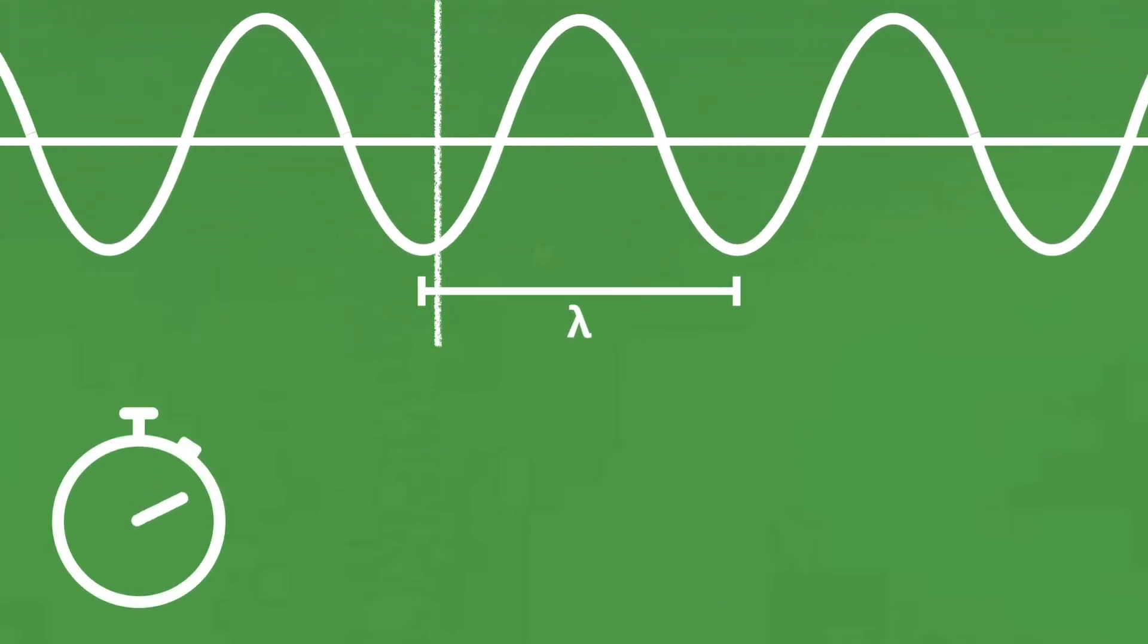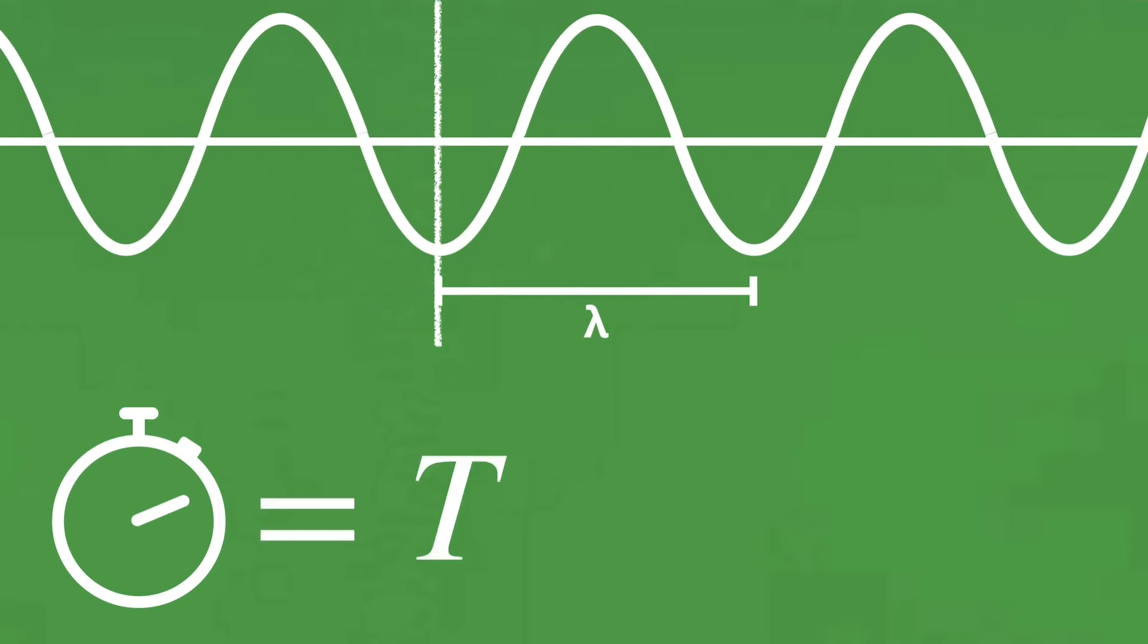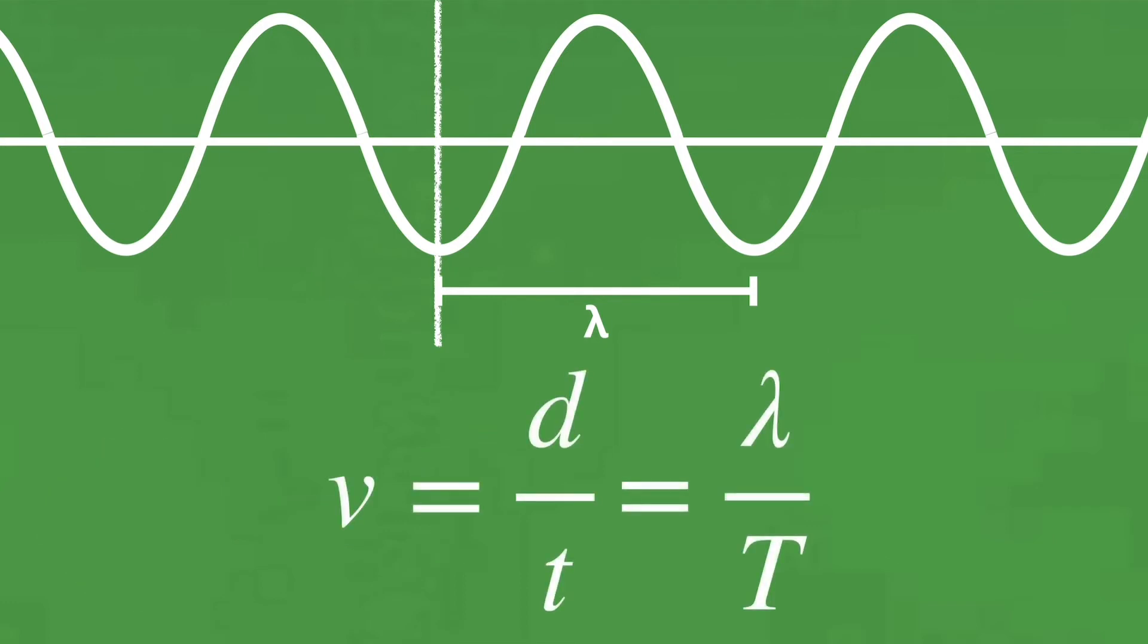If we choose the distance to be the wavelength, then the time taken for the wavelength to pass a point is defined as the period. So we plug in our distance and time into the equation for velocity.